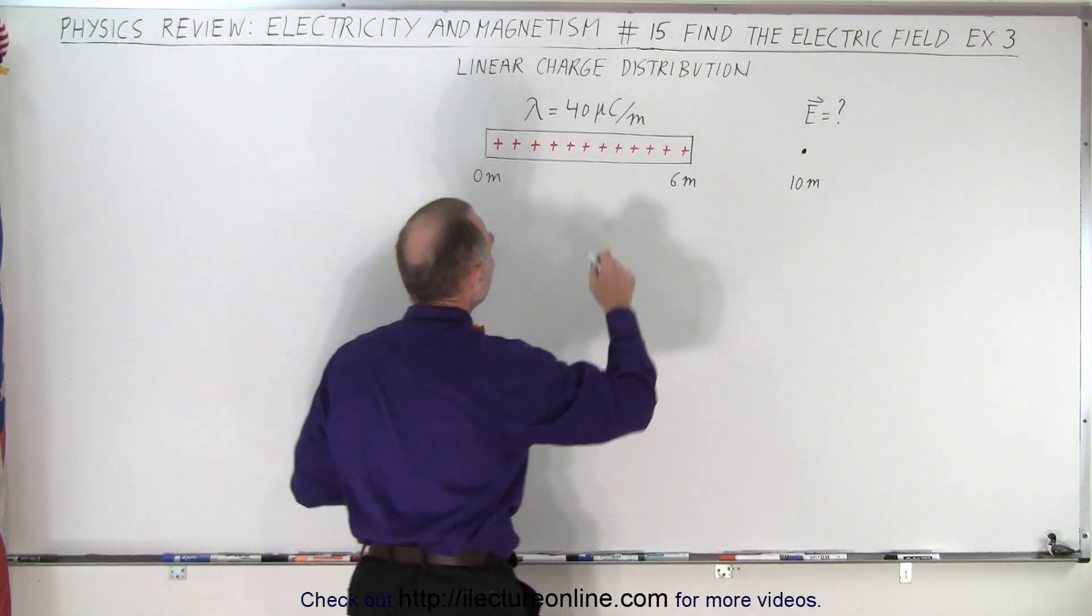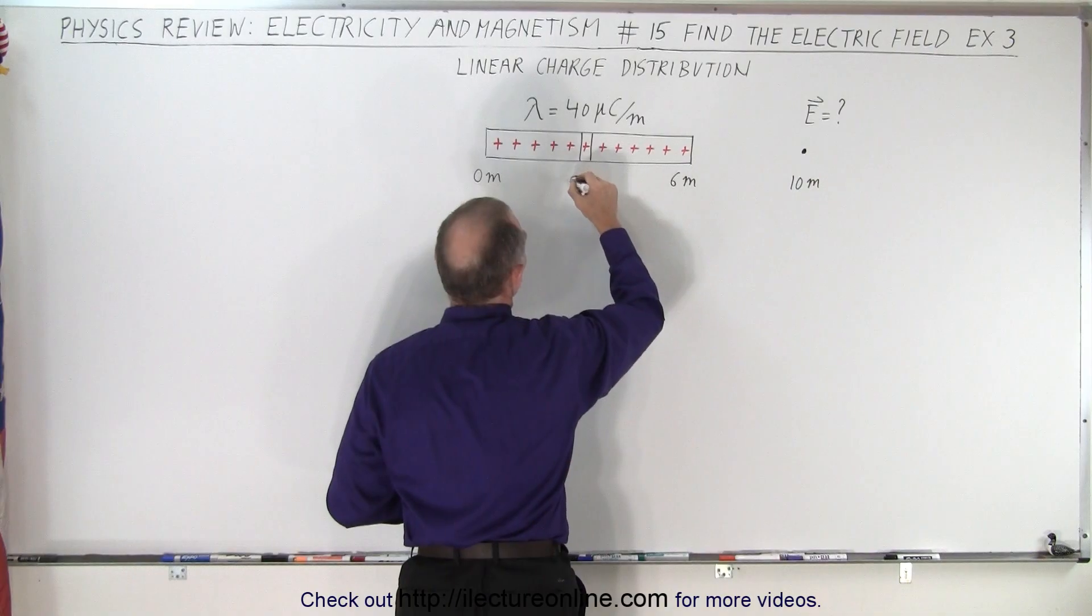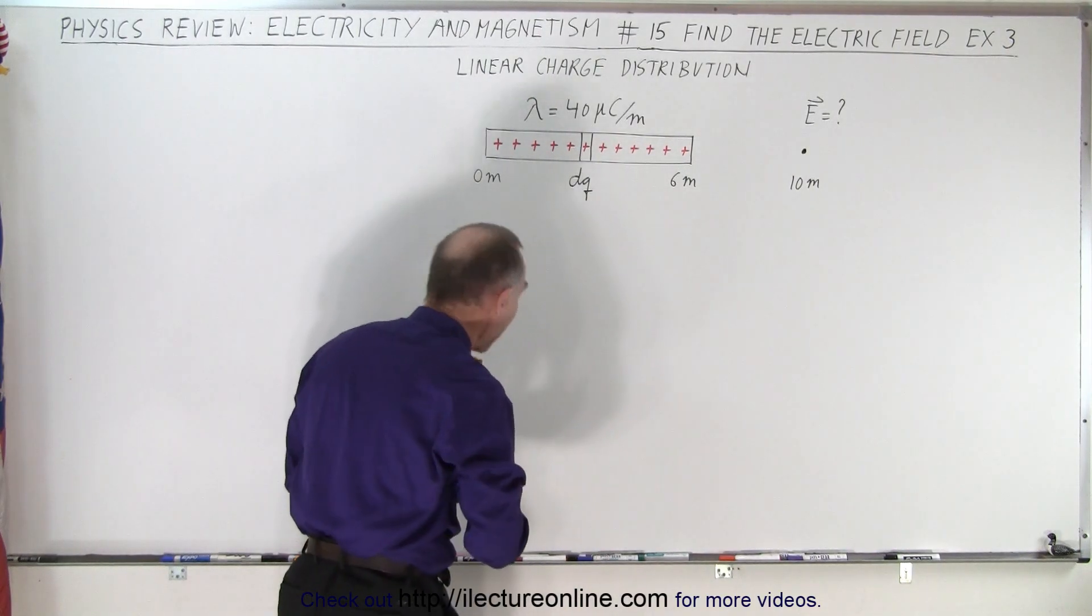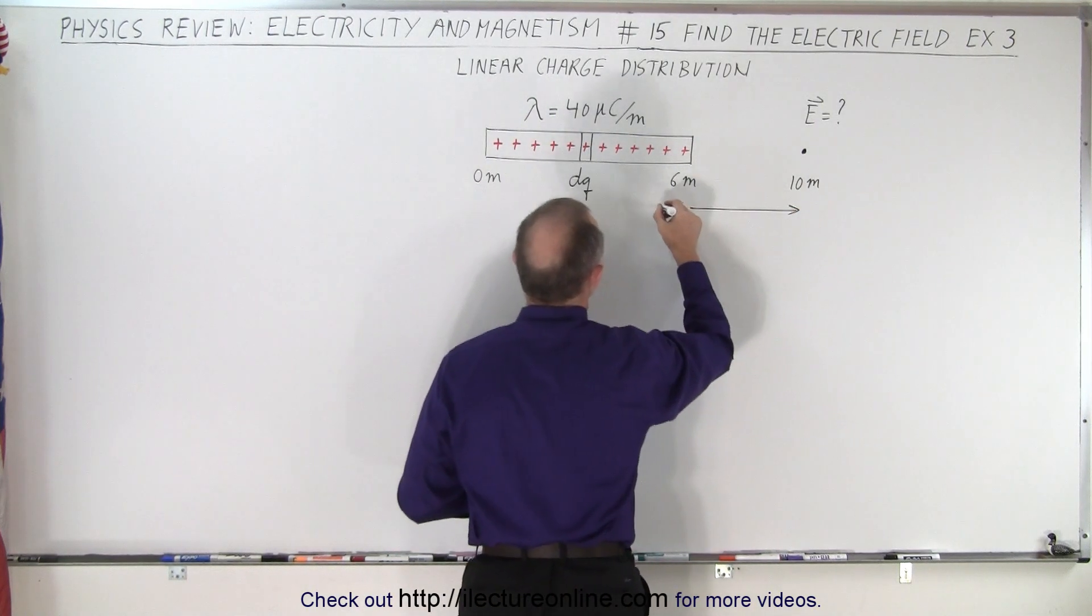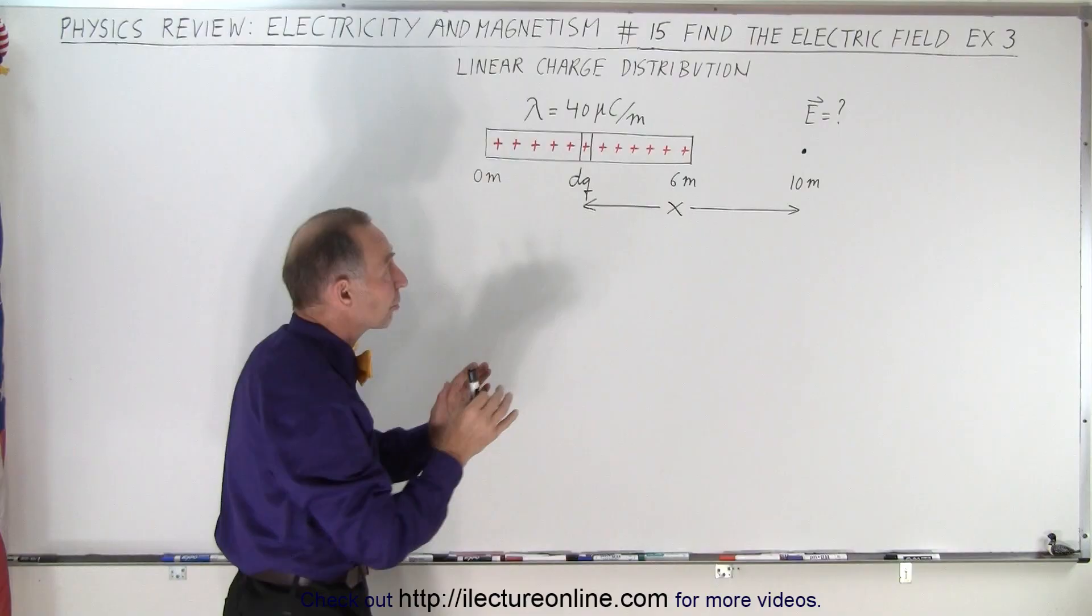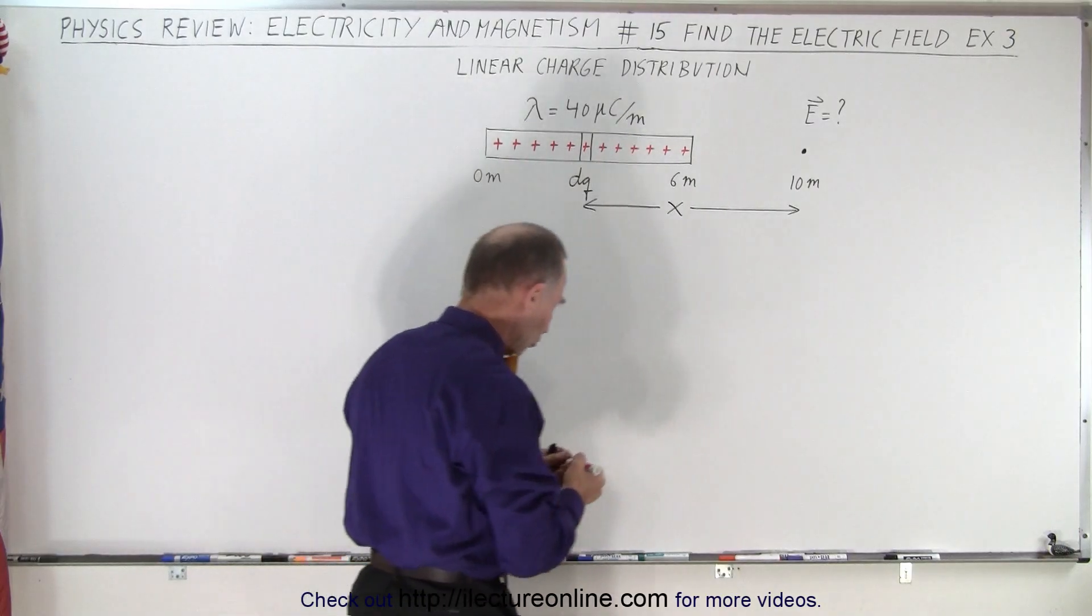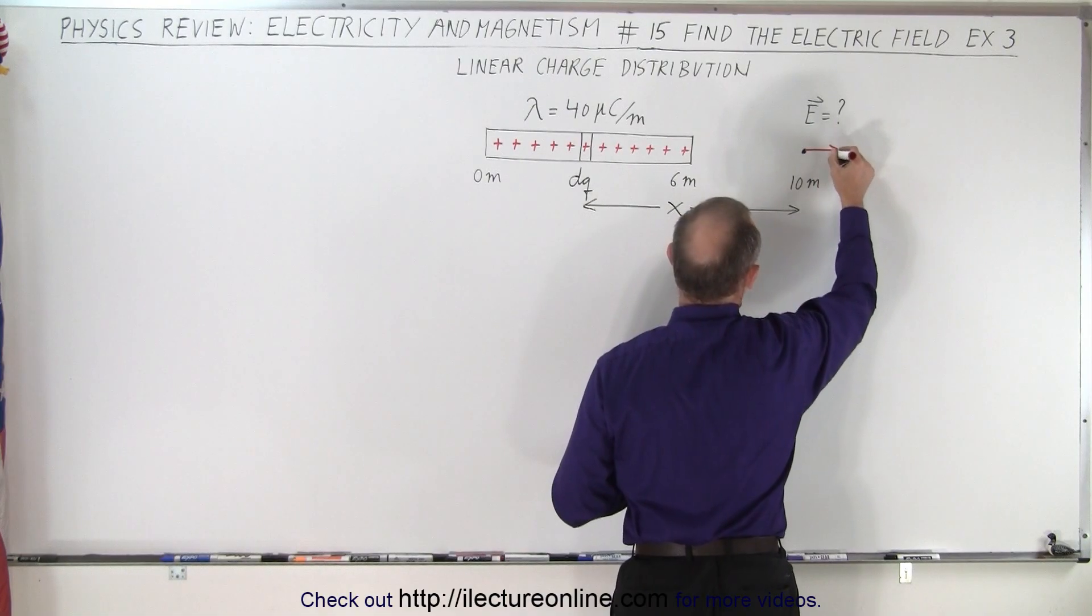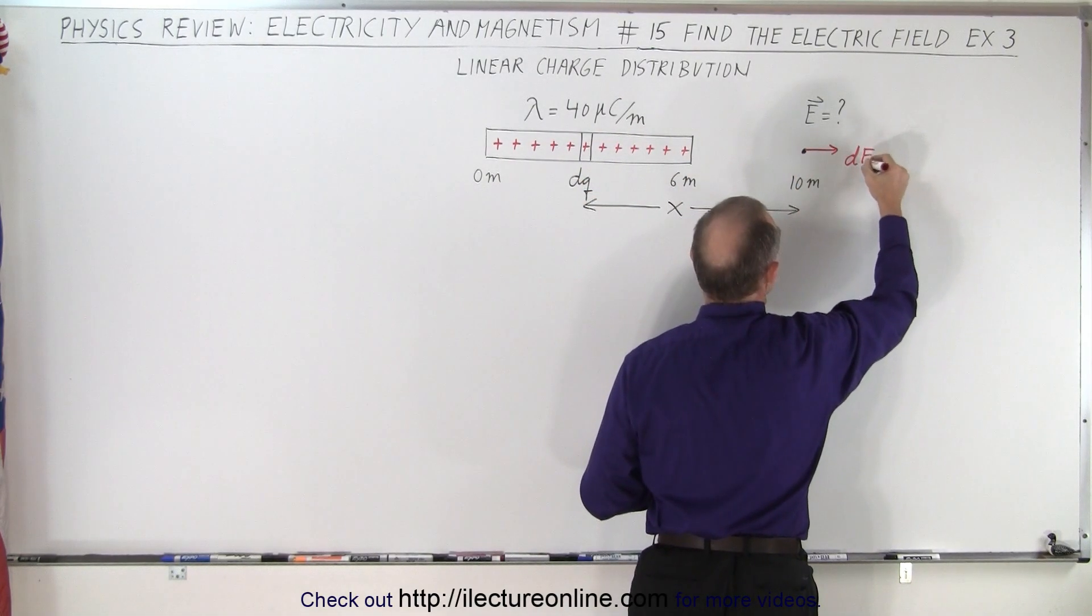The way we do that is we're going to take a small little piece of that and say this little piece has a small amount of dq on it, so a small amount of charge, and that particular dq is a distance of x away from the point of interest. And so that little dq is going to cause an electric field to exist at that location, so let's draw that electric field. There'll be a small amount of electric field in this direction because it emanates away from a positive charge and we call that a dE.